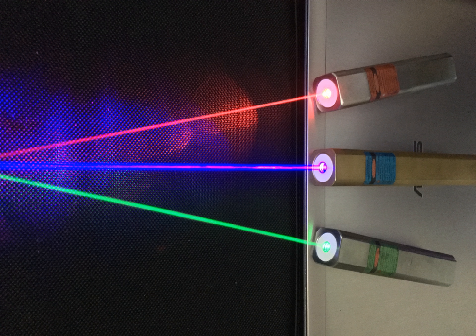For high output power, BBO crystals are used as frequency doublers. For lower powers, KTP is used.